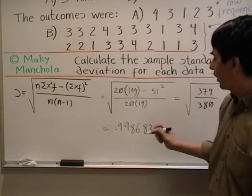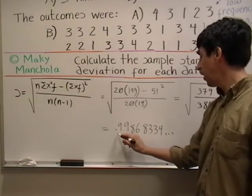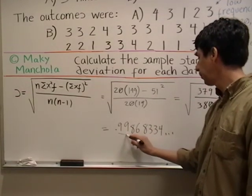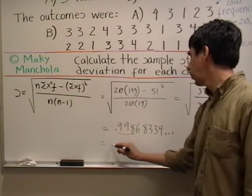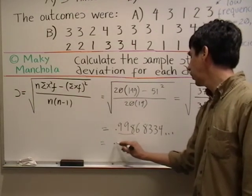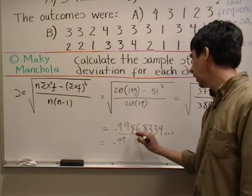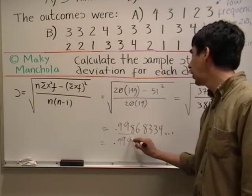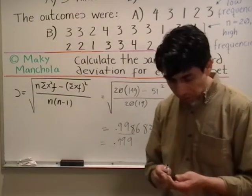If we round this to the nearest thousandth, we obtain approximately 0.999. This completes the example.